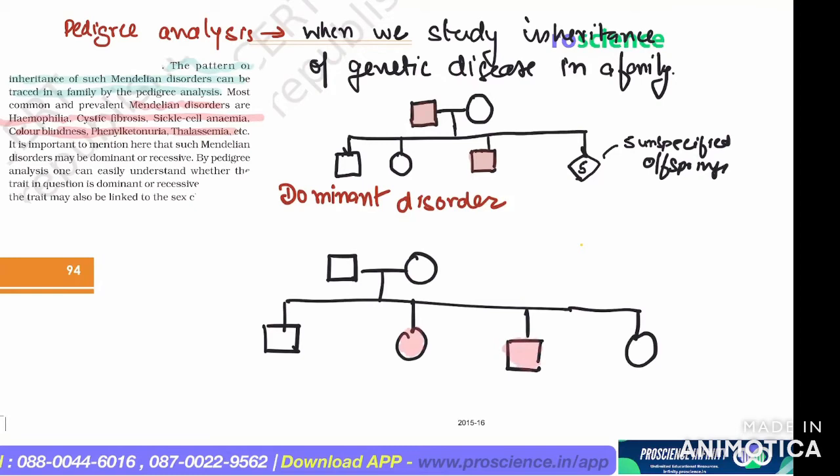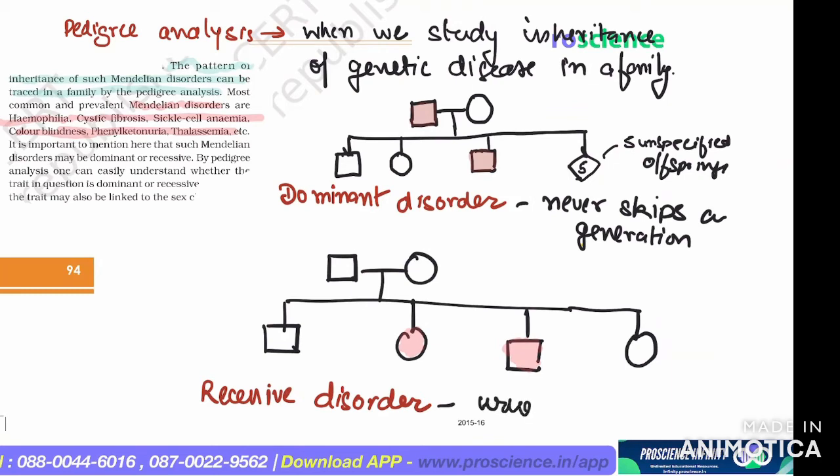I can see that the mother and father are not affected, but their offspring are affected. The disorder is recessive. Generation is skipped here. This is a recessive disorder. A dominant disorder never skips a generation. But a recessive disorder usually skips one generation.